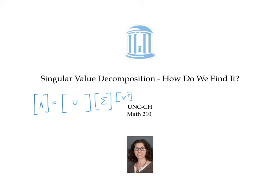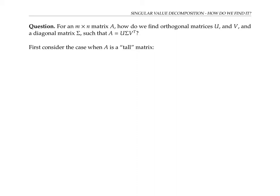I'll also do one example. I'm going to postpone to another video explaining why this algorithm actually works — why at the end of it we actually get matrices whose product is A, and why the matrices U and V that we get are actually orthogonal. So for an M by N matrix A, how do we find orthogonal matrices U and V and a diagonal matrix sigma, such that A equals U sigma V transpose?